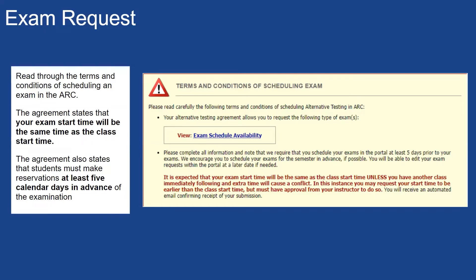Read through the terms and conditions of scheduling an exam in the ARC, located in a yellow box at the top of the page. The agreement states that your exam start time will be the same time as the class start time. ARC staff members will review your exam request to ensure that you take the exam on the correct date and at the correct time. Your professor will also have the opportunity to dispute an exam request if they notice an incorrect date or time. It's also important to note that professors always have the option of providing testing accommodations for students on their own. The agreement also states that students must make reservations at least five calendar days in advance of the examination, although students can sign up for tests earlier than that as well.